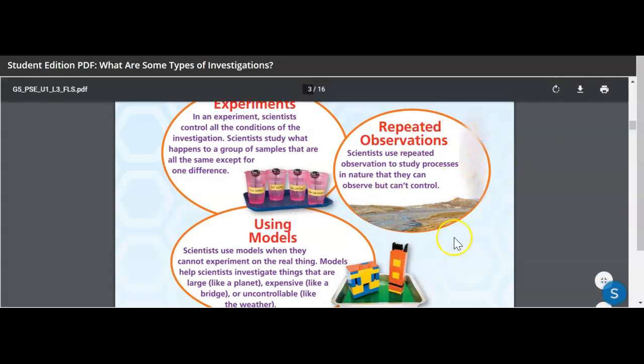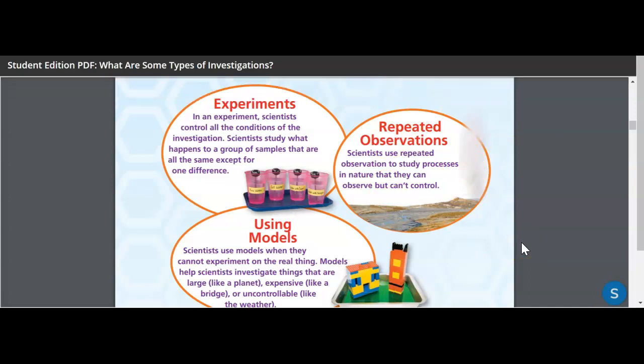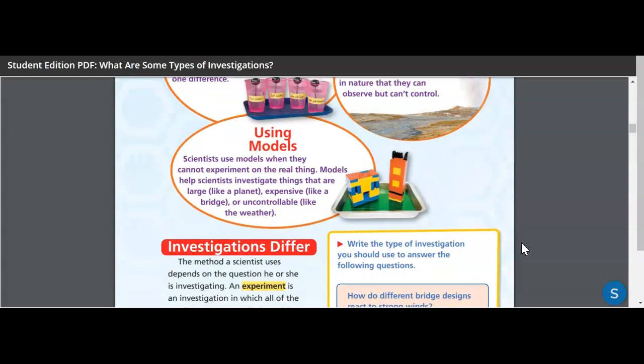So repeated observations, very important. Scientists use repeated observation to study processes in nature that they can observe but can't control. So you can observe something happening, but you can't necessarily control it as it's happening. So using models. Scientists use models when they cannot experiment on the real thing. It's a representation of a bigger thing. Models help scientists investigate things that are large, like a planet, expensive like a bridge, or uncontrollable like the weather.